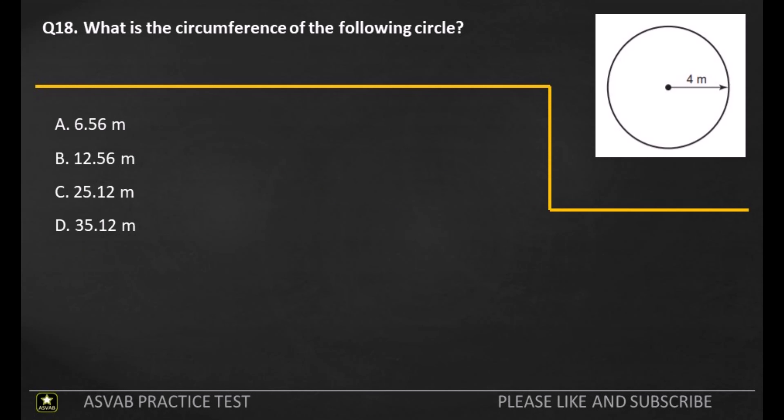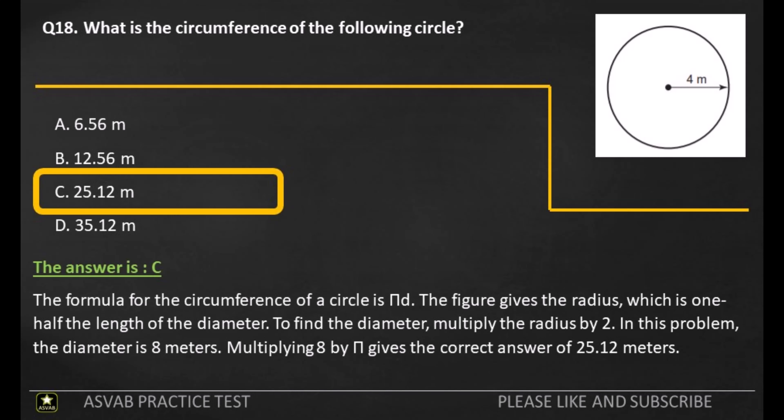Q18. What is the circumference of the following circle? A: 6.56 meters. B: 12.56 meters. C: 25.12 meters. D: 35.12 meters. The answer is C. The formula for the circumference of a circle is pi times D. The figure gives the radius, which is one-half the length of the diameter. To find the diameter, multiply the radius by 2. In this problem, the diameter is 8 meters. Multiplying 8 by pi gives the correct answer of 25.12 meters.